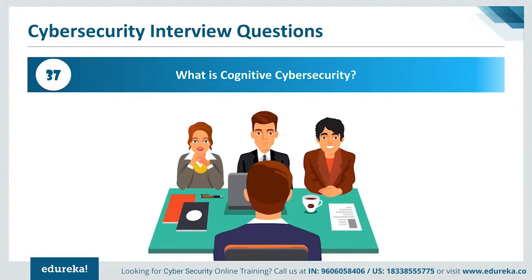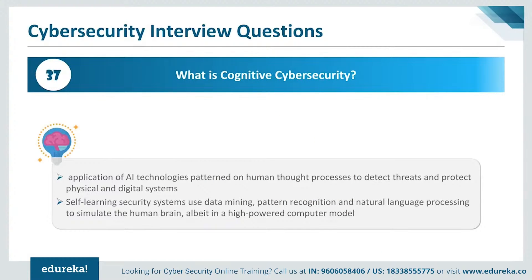The next question is: what is cognitive cybersecurity? The applications of artificial intelligence technologies, patterned on human thought processes, are used to detect threats and protect physical and digital systems. Self-learning security systems use data mining, pattern recognition, and natural language processing to simulate the human brain in a high-powered computer model. This is exactly what cognitive cybersecurity is.